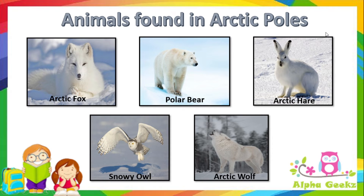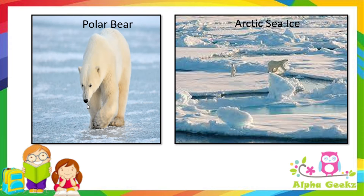Animals found in the Arctic poles include the arctic fox, polar bear, arctic hare, snowy owl, and arctic wolf. The typical winter sea ice temperature in the Arctic is approximately minus 20 to minus 40 degrees Celsius. Let's see how polar bears have adapted themselves to survive in such harsh weather.